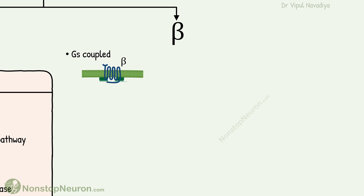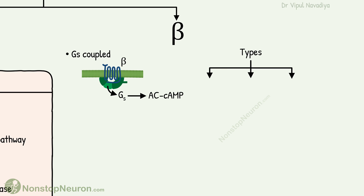Now let's move toward the beta-receptors. They all are coupled to Gs protein, so they act through the adenylyl cyclase-cAMP pathway. There are three subtypes of beta-adrenergic receptors: beta-1, beta-2, and beta-3.